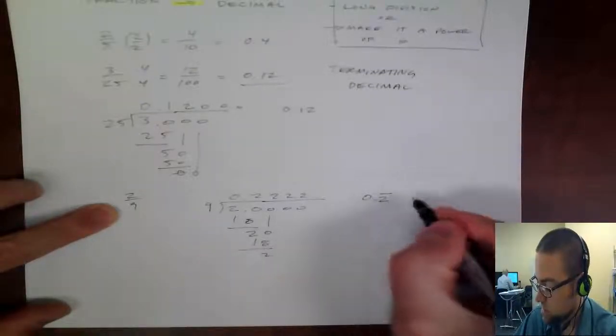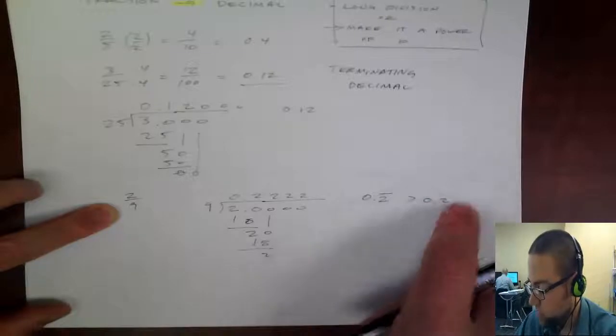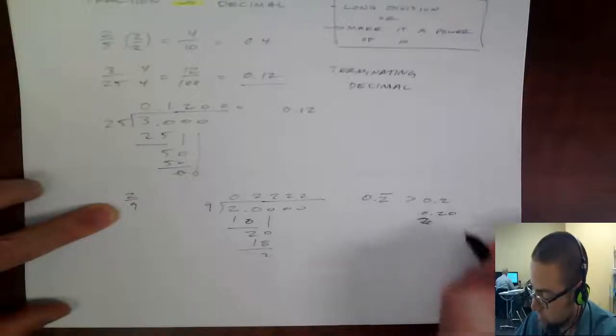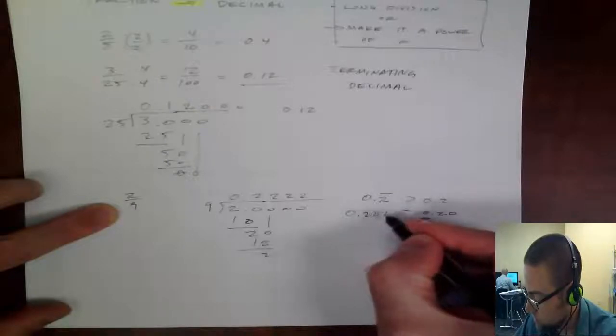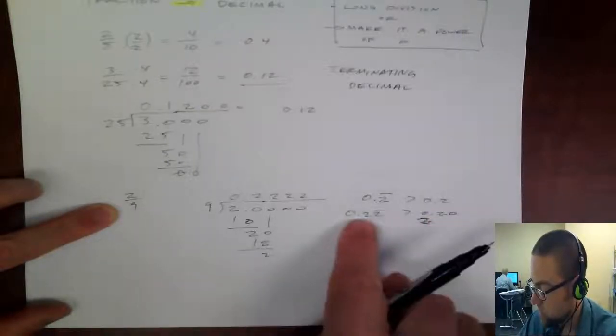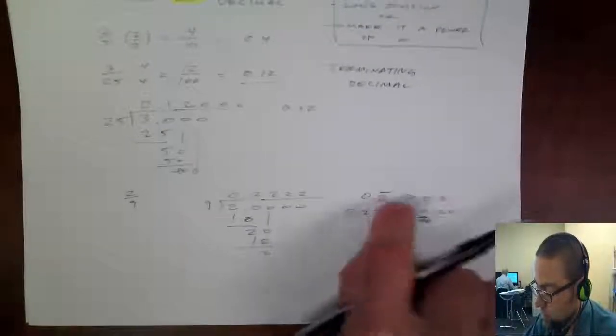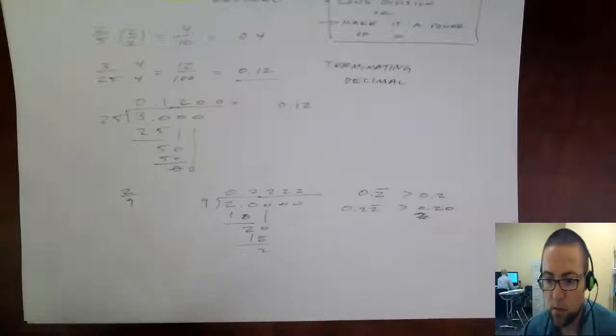So this is greater than 0.2, right? 0.2 with a terminating decimal can be written as 0.20, right? And with a repeating decimal, I could write it as 0.22 repeating, right? So 22 is greater than 20. So don't think that these two are equal. This has more 2s on it, and this has a 0.